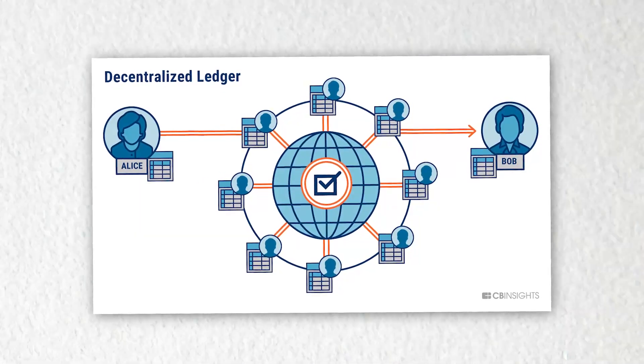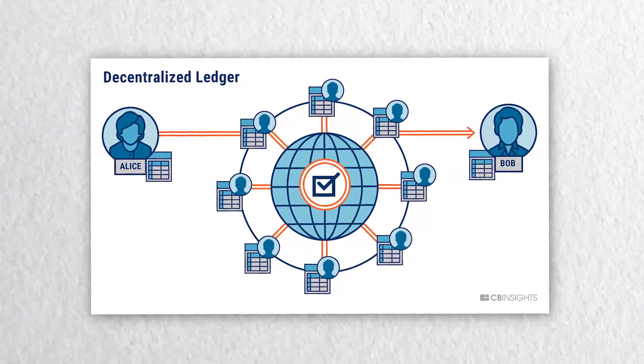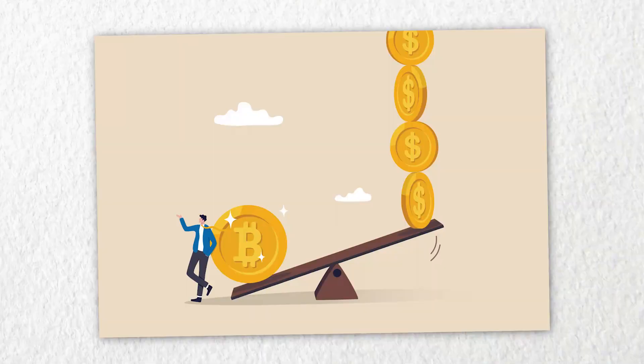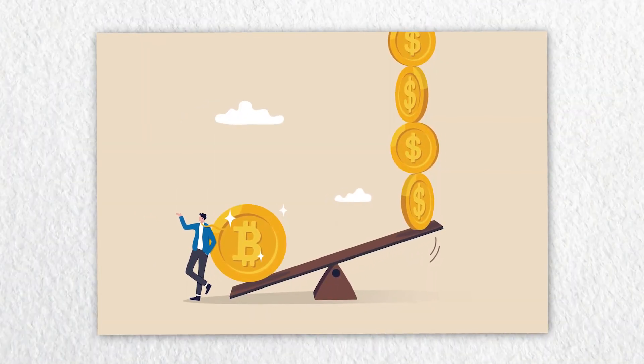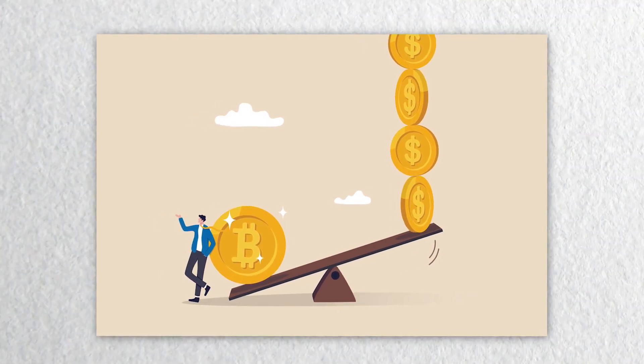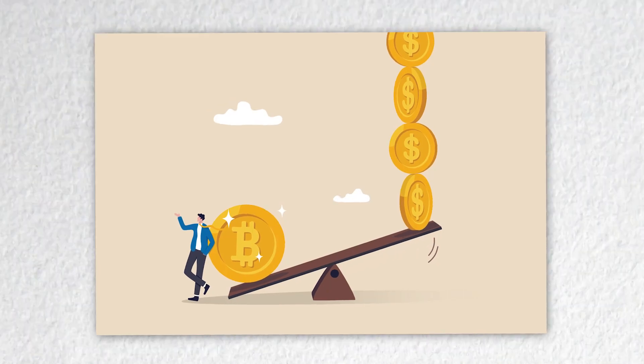decentralized public ledger to decentralize the network, so it's not under the control of just one entity. But while Bitcoin is used primarily as a store of value, the idea behind Ethereum is to decentralize other kinds of applications and services, from social media networks to more complex financial agreements.